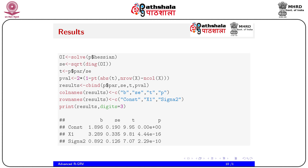From the results, compute standard errors as sqrt(diag(solve(p$hessian))), t-statistics as p$par / se, and p-values as 2*(1 - pt(abs(t), nrow(x) - ncol(x))). Organize results into a matrix with columns: estimate, standard error, t-statistic, p-value, and rows: constant, x1, sigma2. Printing with digits = 3 shows the estimated betas, standard errors, t-statistics, and corresponding p-values.